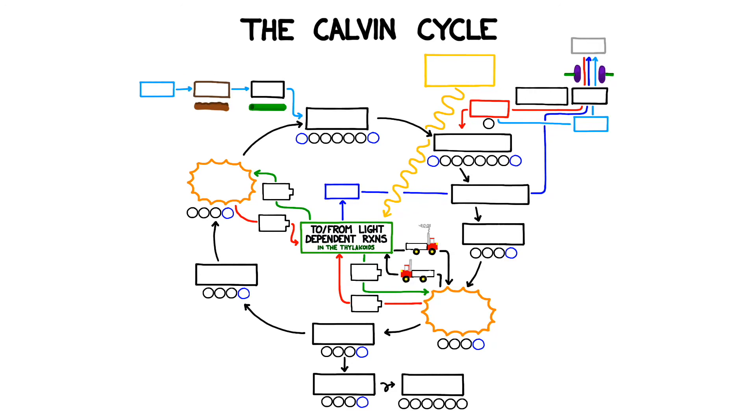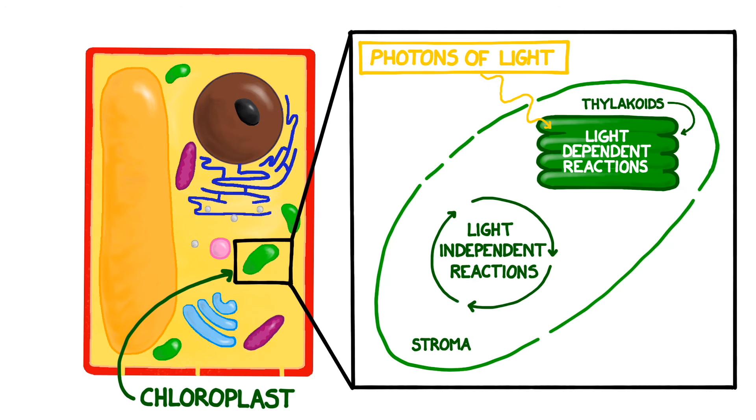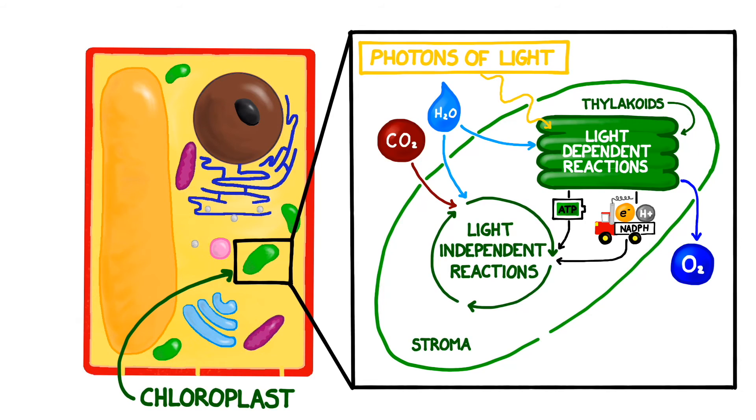The Calvin cycle is the synthesis part of photosynthesis, where we assemble important products. In the Calvin cycle, we'll use some of the products of the light dependent reactions, specifically ATP and NADPH, and we'll add in carbon dioxide and water. The goal of this whole process is to finally generate sugars.